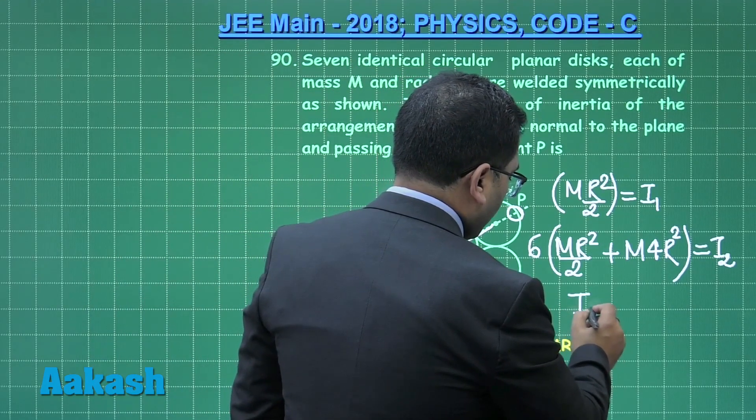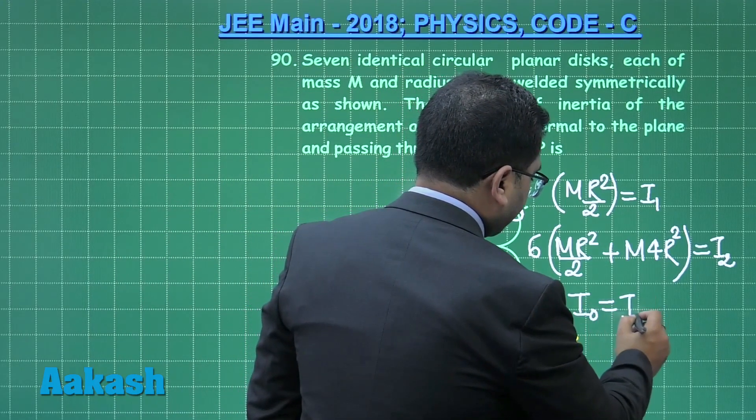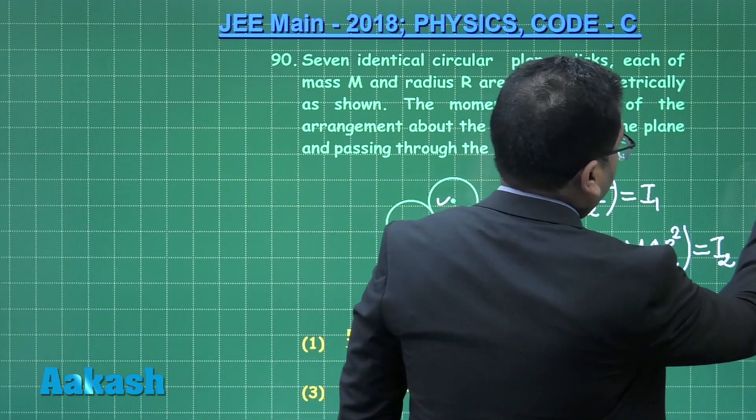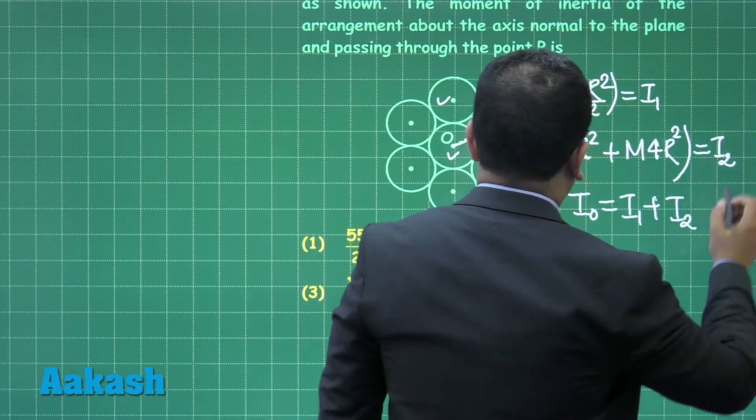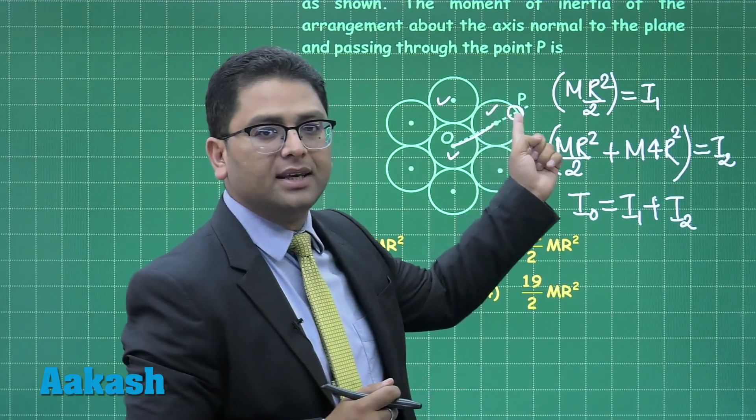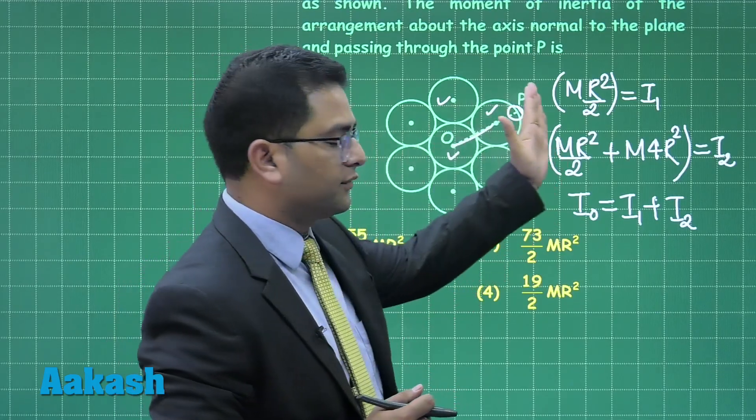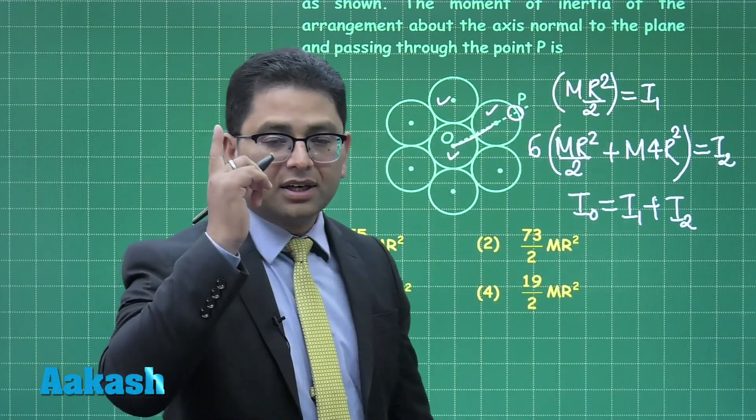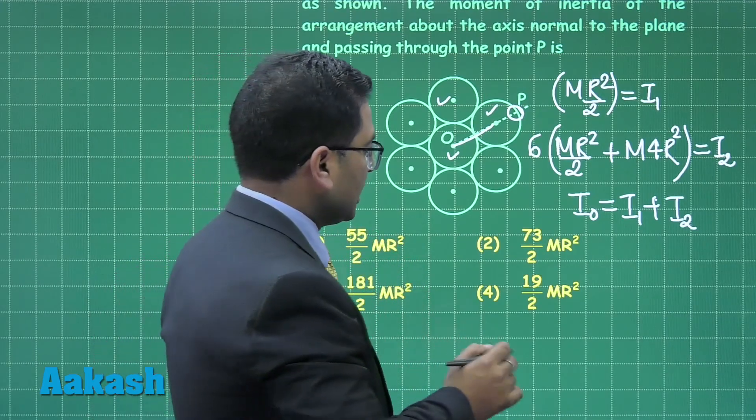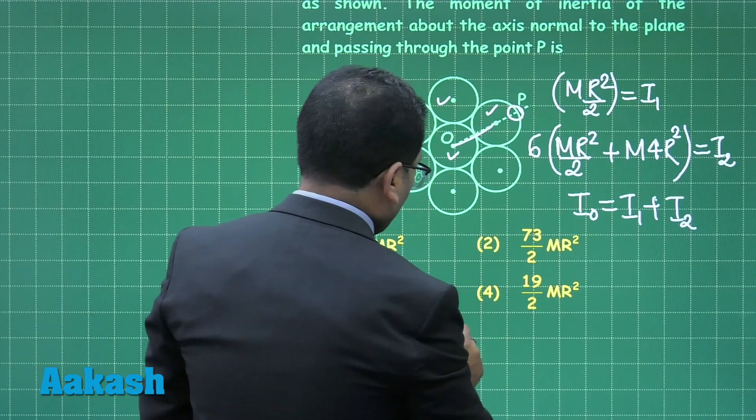All right, so we calculated the total moment of inertia about O, but the question demands the total moment of inertia about P. So we'll shift by parallel axis, but not forgetting the total mass is 7m. So here what we'll do is say the total moment of inertia about P is going to be I_O plus 7m into distance.